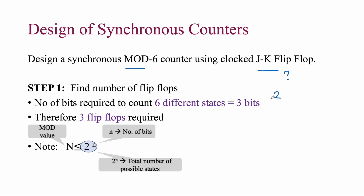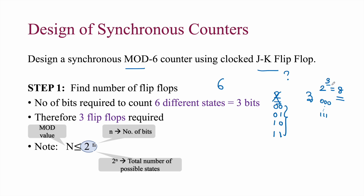We need to decide how many JK flip-flops are required to achieve a mod 6 counter. If we take two flip-flops we have only four states (00, 01, 10, 11), which is not enough. Assuming three flip-flops, we get states from 000 to 111, which is 2³ = 8 states. Since we need only six states for a mod 6 counter, three bits of data — and therefore three flip-flops — are the minimum required.